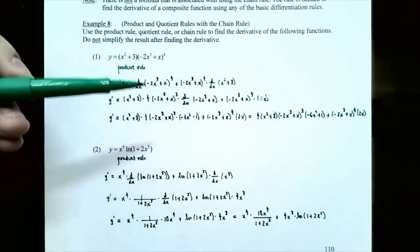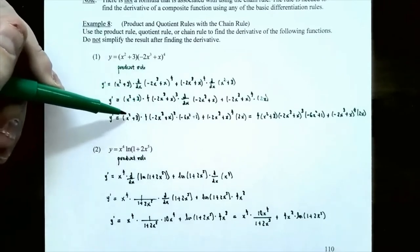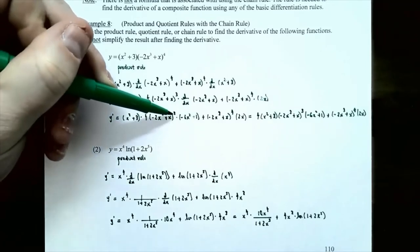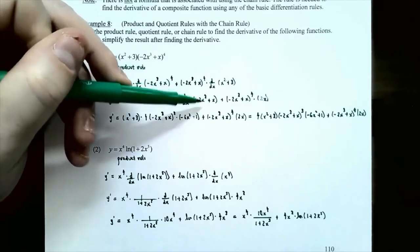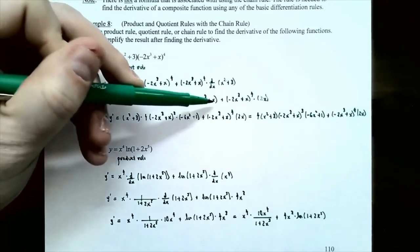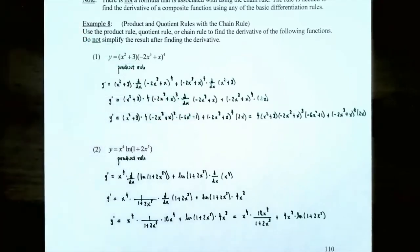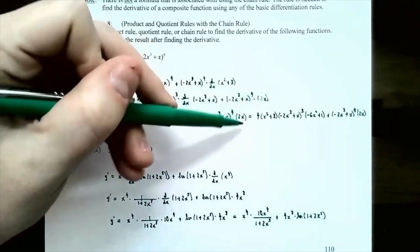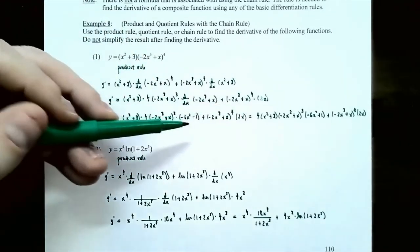We have one derivative left: the derivative of the inside function after using the general power rule. y prime is: x squared plus 3 times 4 times negative 2x cubed plus x to the third power. The derivative of the inside function: derivative of negative 2x cubed is negative 6x squared, and derivative of x is 1, so negative 6x squared plus 1 in parentheses — multiply by the entire derivative of the inside function. Plus negative 2x cubed plus x to the fourth power times 2x. That's the answer; no need to simplify.